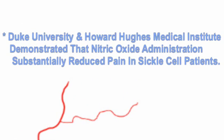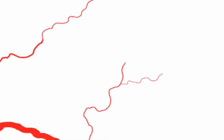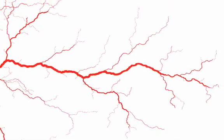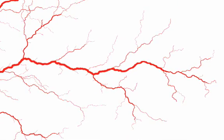Researchers at Duke University and Howard Hughes Medical Institute demonstrated that when nitric oxide was administered to sickle cell patients in pain, their pain was substantially reduced. We'll look at this in our next video, because nitric oxide production is key in helping to reduce the pain associated with sickle cell anemia.